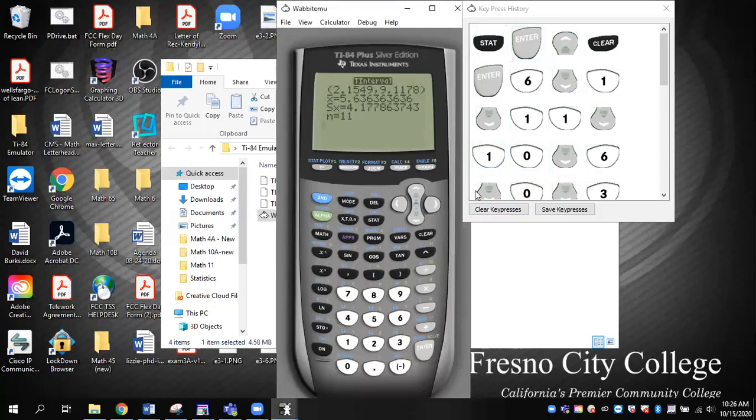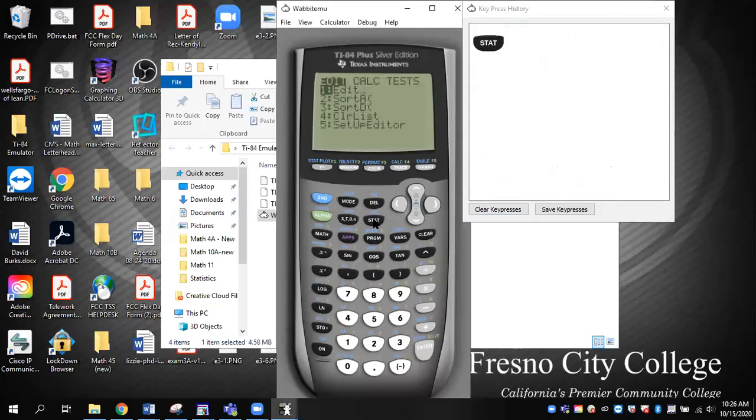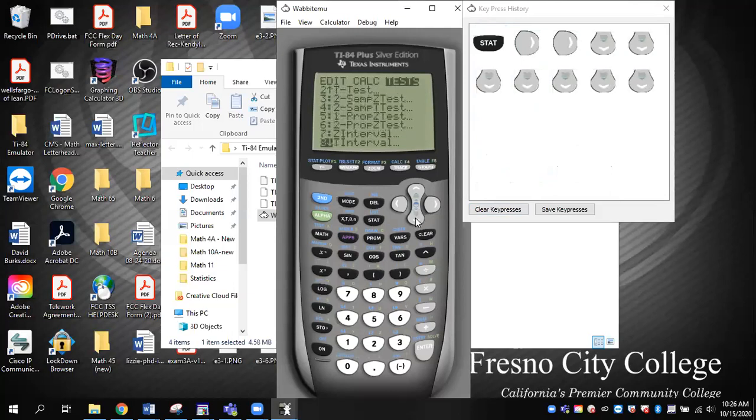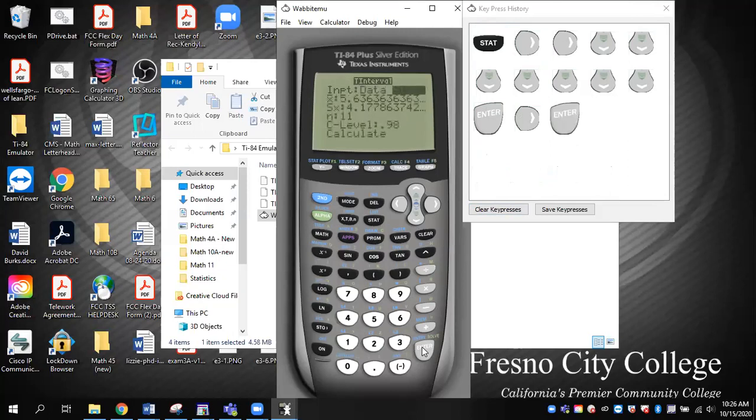So put that information in and I'll do that as well. Let you write that down and then I'll do that on the screen. All right. Turn it on. Here we go. So stat over to tests on down to T interval. Hit enter. Go over to stats because we don't have data. We don't have data on this one. Enter. There we go. There's my last problem I solved.